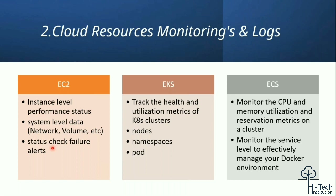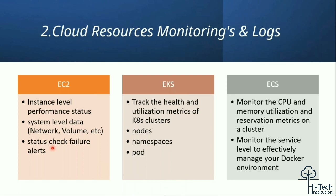In EC2, there are status check statistics — zero bar, two, one bar two — that are very much important. When you're answering during an interview, this is the first indication when a server is down in AWS. The first thing we check is the statistics. Nobody mentioned this in their answers — the question looks very simple but the exact answer is very different.